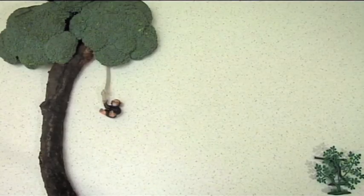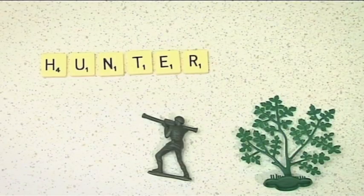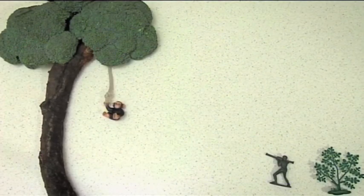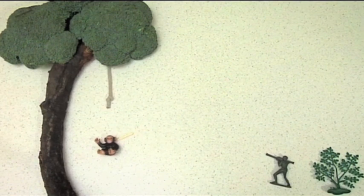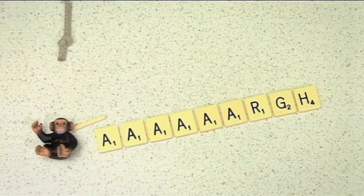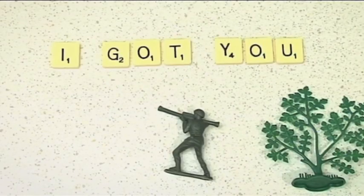Unfortunately for the monkey, gravity is acting against him. Both the monkey and the arrow are falling to the ground at the same rate due to gravity. The monkey expects the arrow to pass overhead, but instead it hits him right on target.